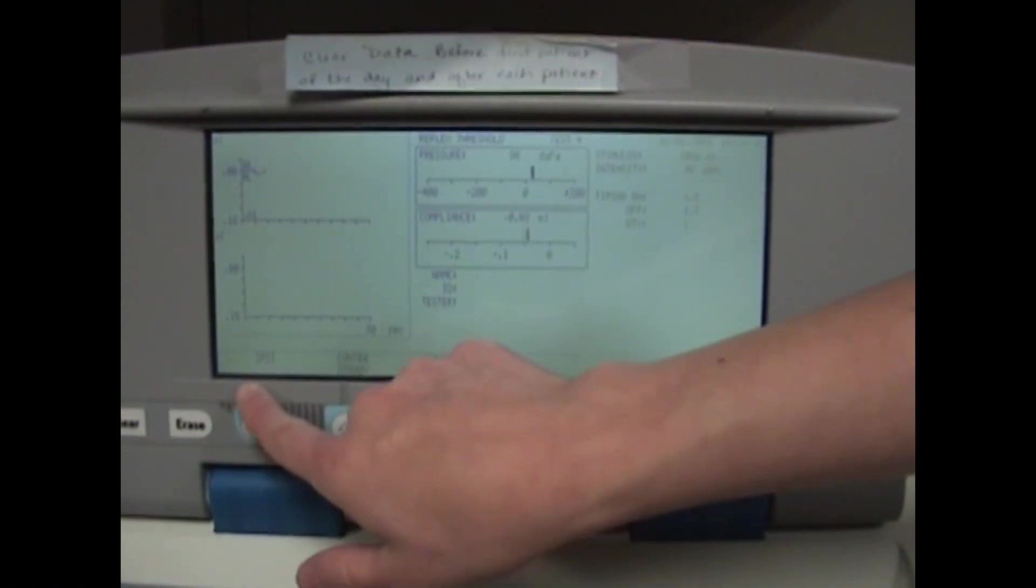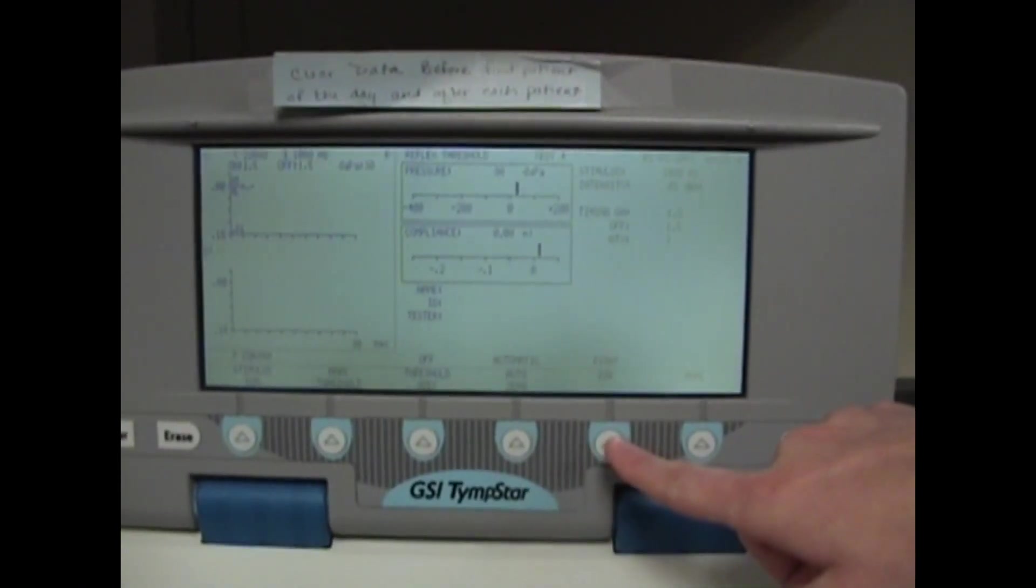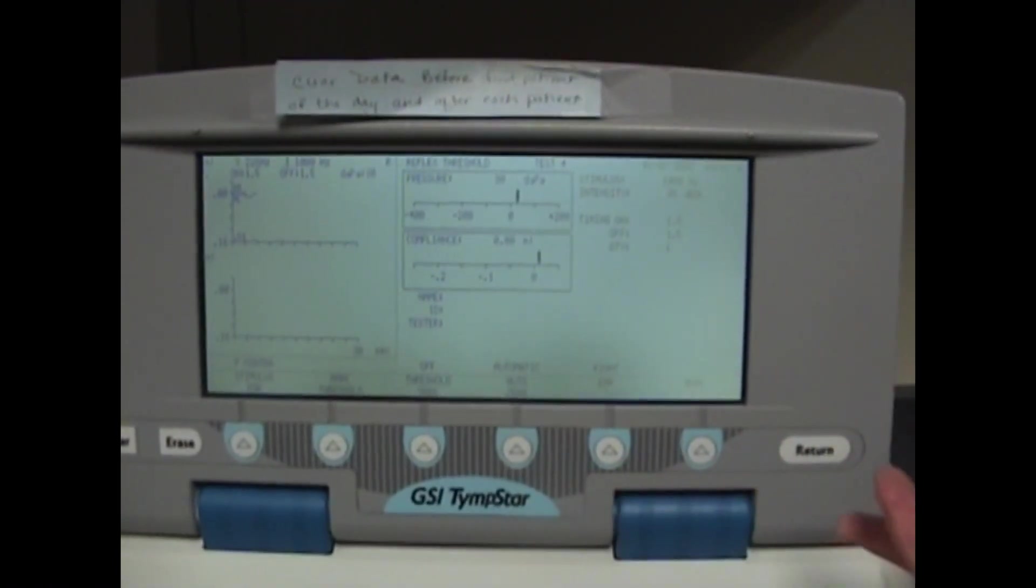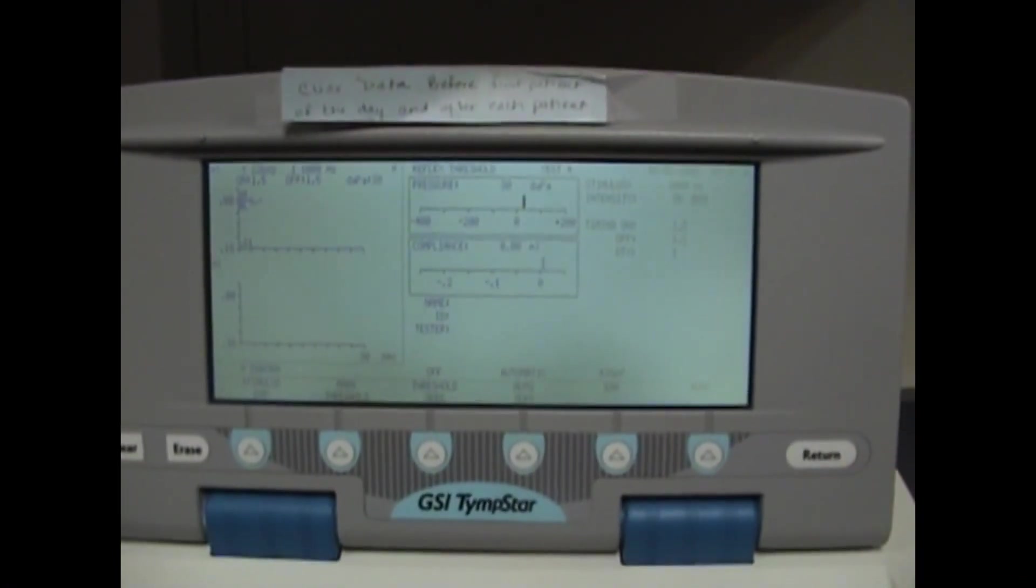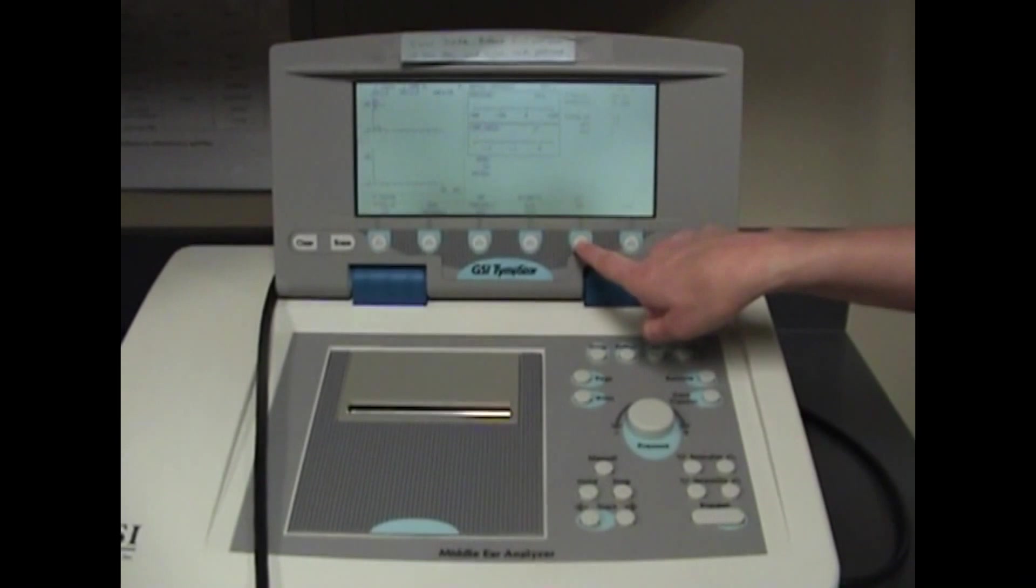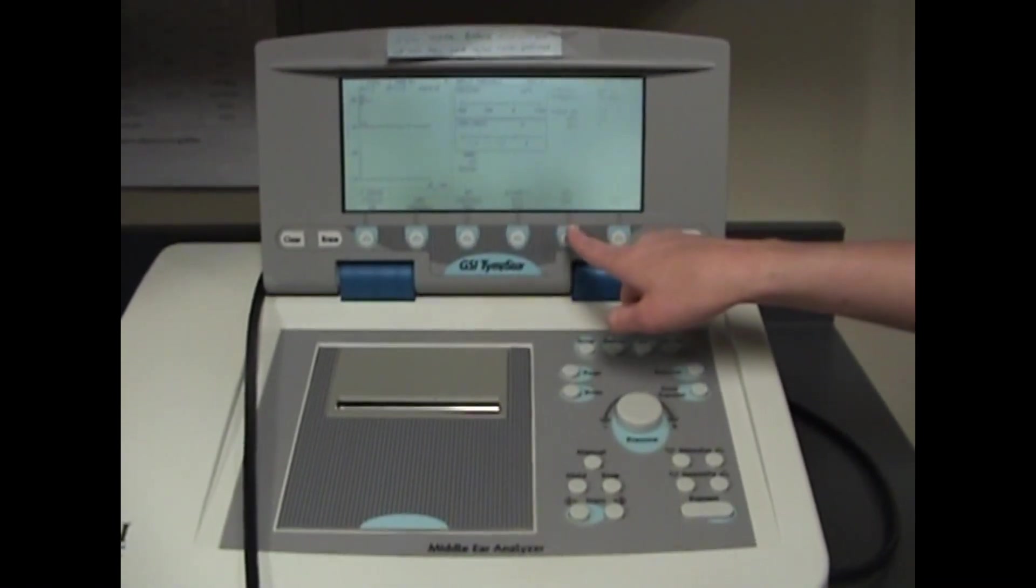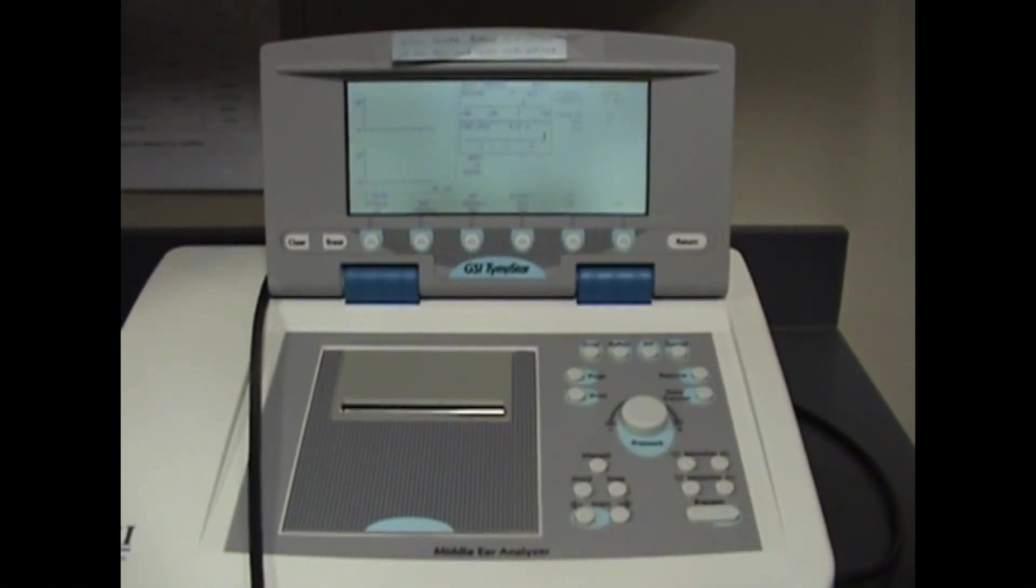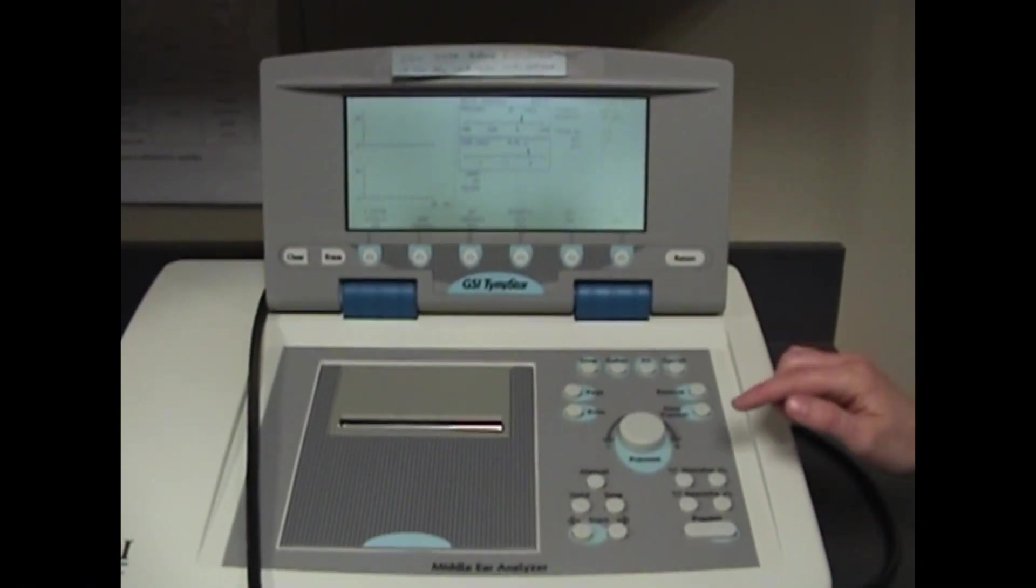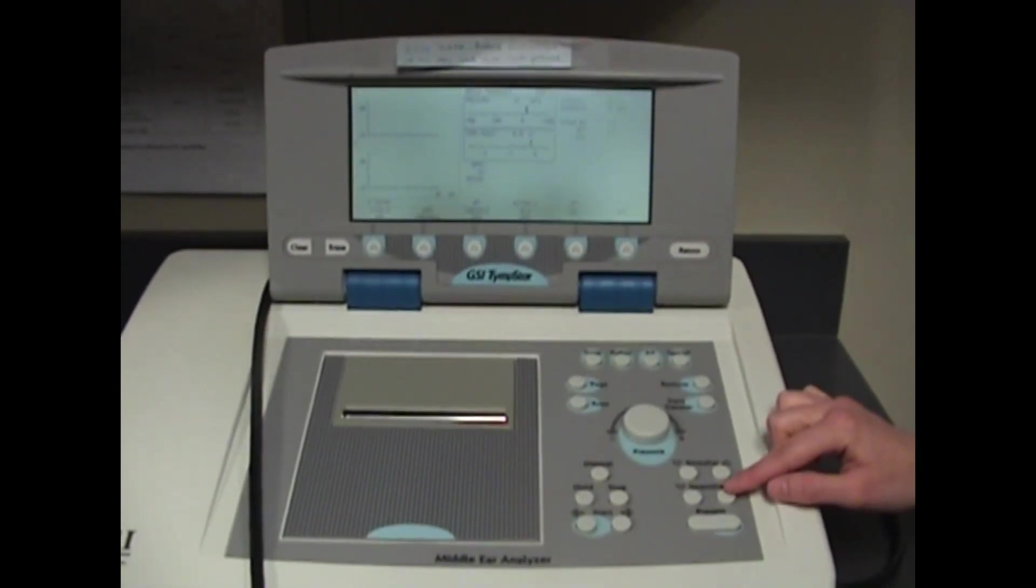Now that we've tested ipsilateral reflexes, we'll select contra pulsed from the menu. This time you'll want to switch from right ear to left ear. If it gives you a message that test ear is already in progress, go back down to your buttons and hit stop so you can select left ear. Again, once we have contra pulsed and left ear selected, we'll press start to put in the probe tone and wait for our screen to zero out.